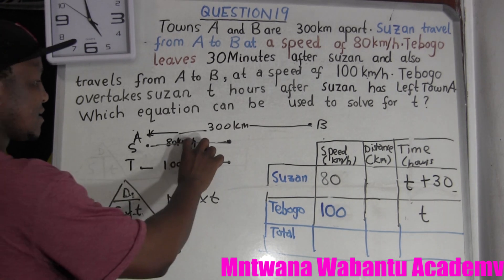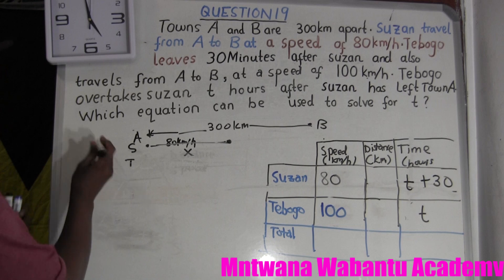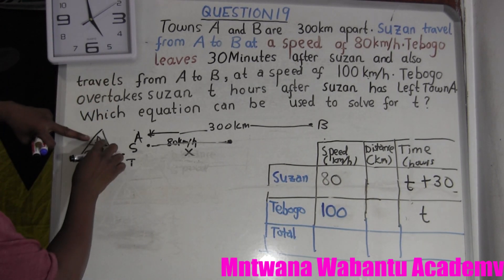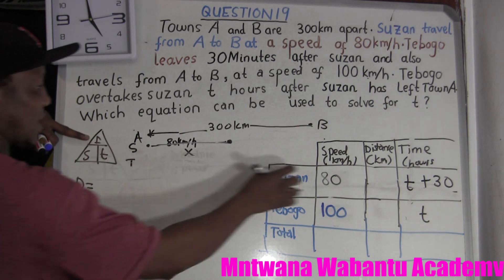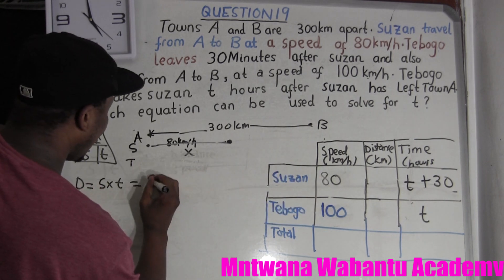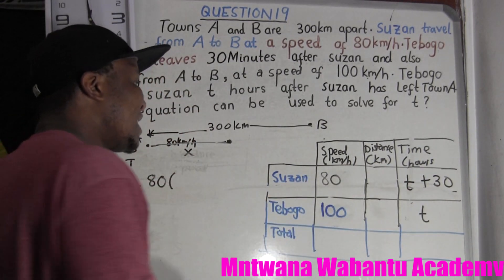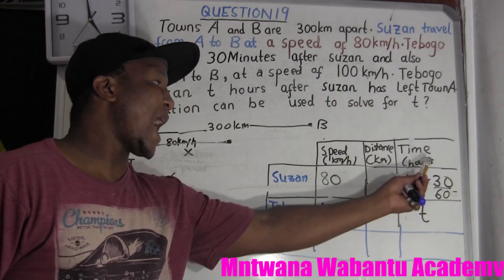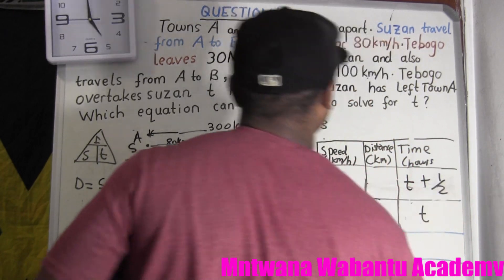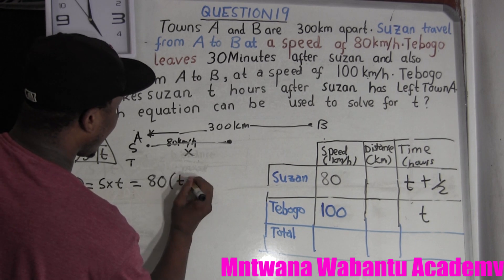For this case, we know they want to cover the same distance, and distance equals speed times time. So let's start with the distance of Susan. Distance of Susan equals the speed of Susan times the time of Susan. The speed is 80 and the time is T plus 30 minutes. But 30 minutes must be converted to hours: 30 over 60 equals one half. So distance of Susan equals 80 times (T plus one half).